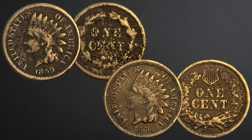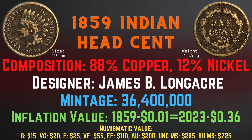Next we will look at the characteristics of two Indian Head cents. Each Indian Head cent has a size of 19 millimeters and a weight of 4.67 grams — the same size and weight as the Flying Eagle cent — with a composition of 88% copper and 12% nickel, and the designer was James B. Longacre. The 1859 Indian Head cent has a mintage of 36,400,000 and an inflation value of 36 cents for the year 1859. Numismatic values range from $15 in good condition up to $725 in brilliant uncirculated mint state condition.